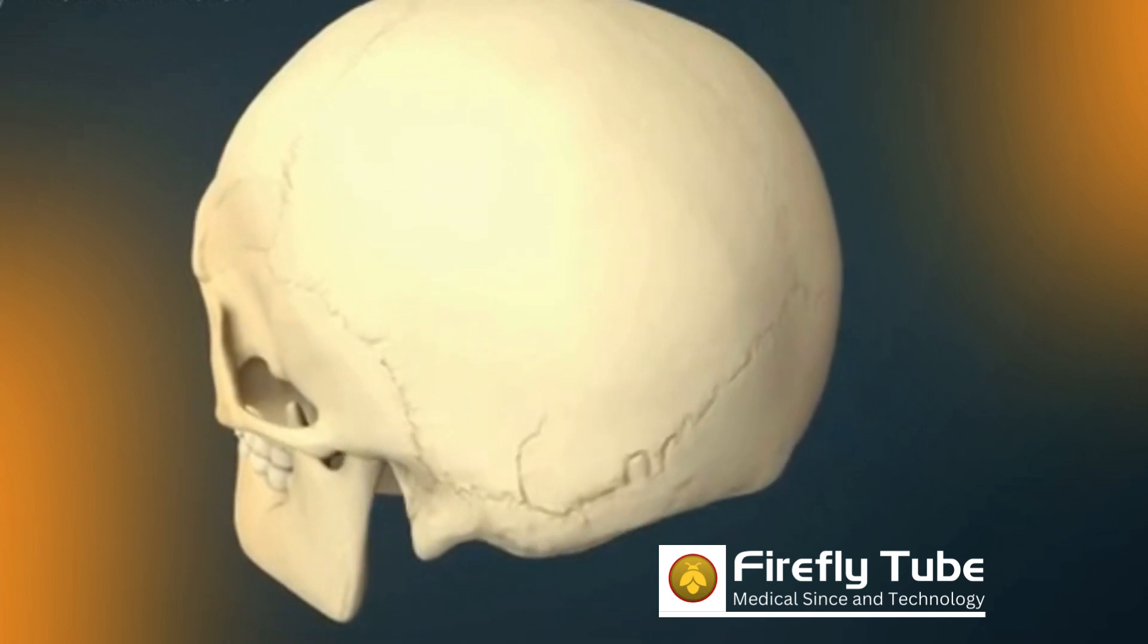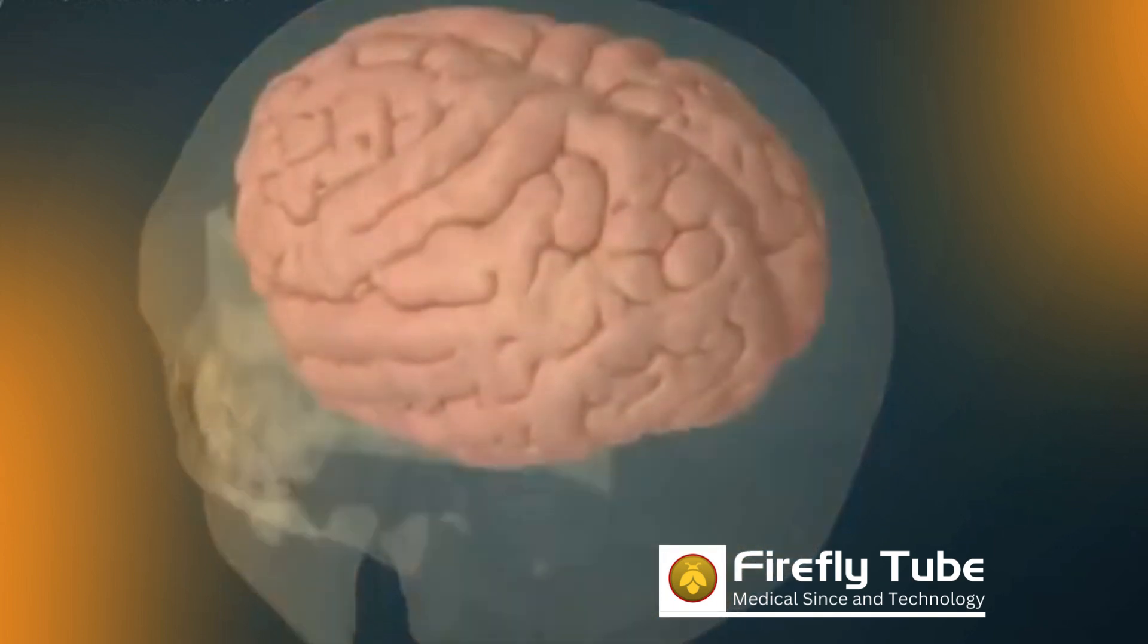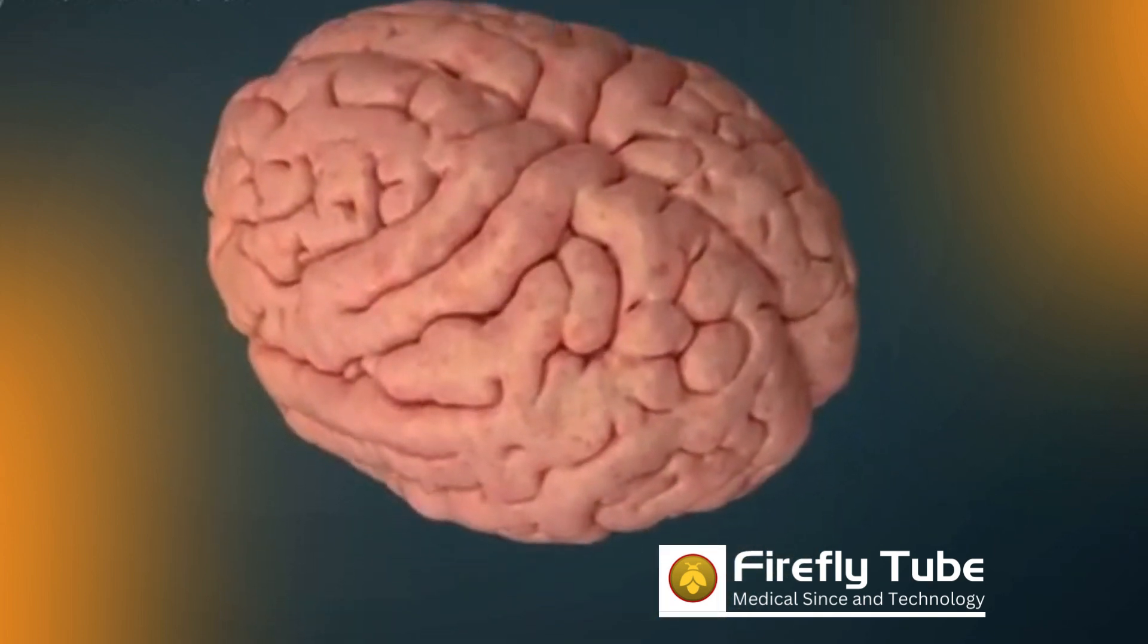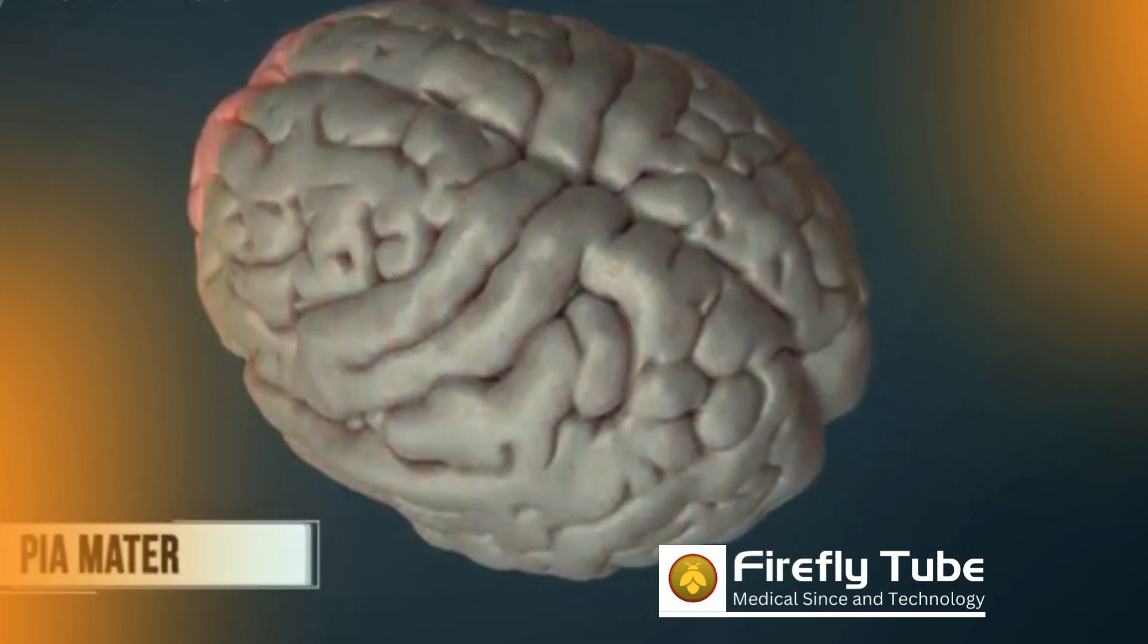In addition, the brain and spinal cord are surrounded by three meninges. The first meninx is attached directly to the brain and is called pia mater.